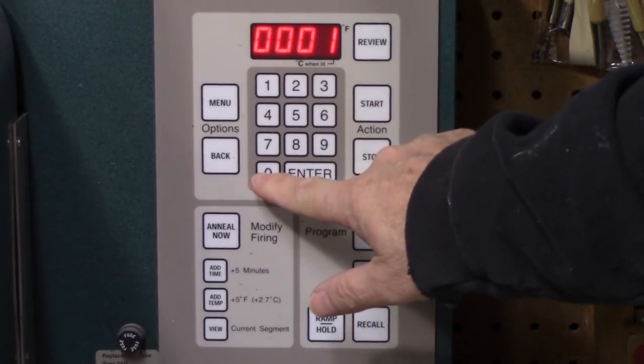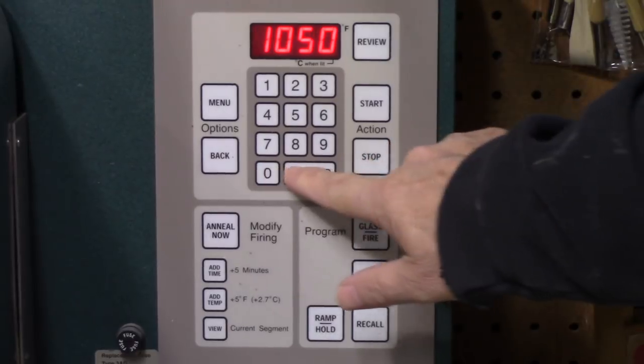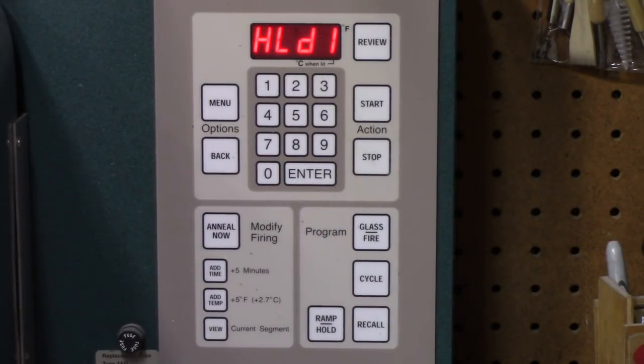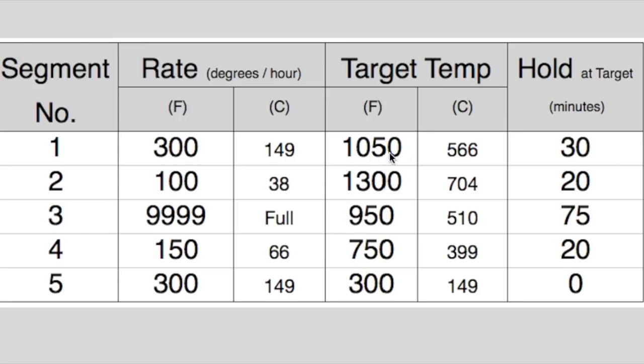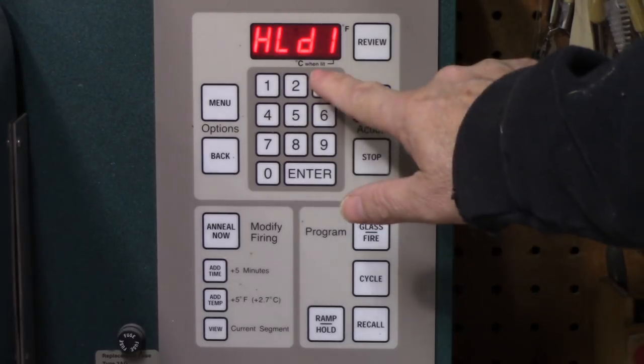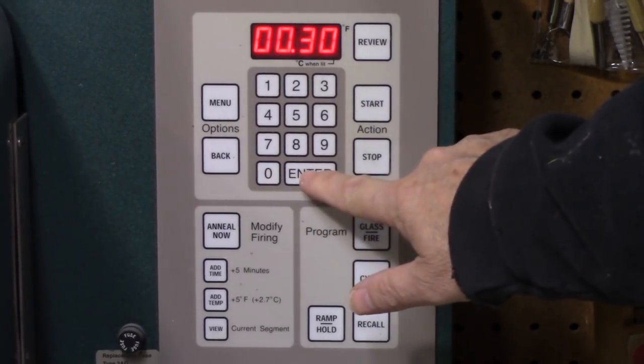1, 0, 5, 0, ENTER, and the readout changes to HLD1. It wants to know the hold time in segment 1. Looks like 30 minutes, so I will enter 30, press ENTER, and the readout moves on to segment 2.